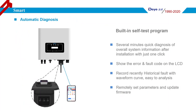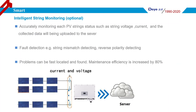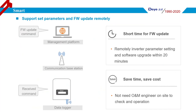All Doye inverter products support remote parameter setting and firmware updates, which takes about 20 minutes. The solar station status can be browsed at any time and anywhere via your cell phone or computer.